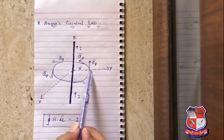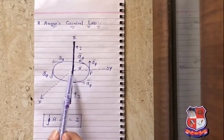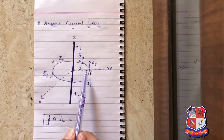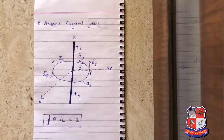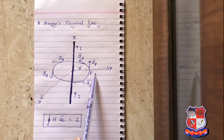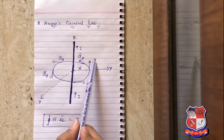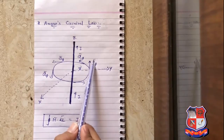The point P is at the perpendicular distance r from the conductor. The next consideration is: consider dl̅ at point P, which is in the a_φ direction.